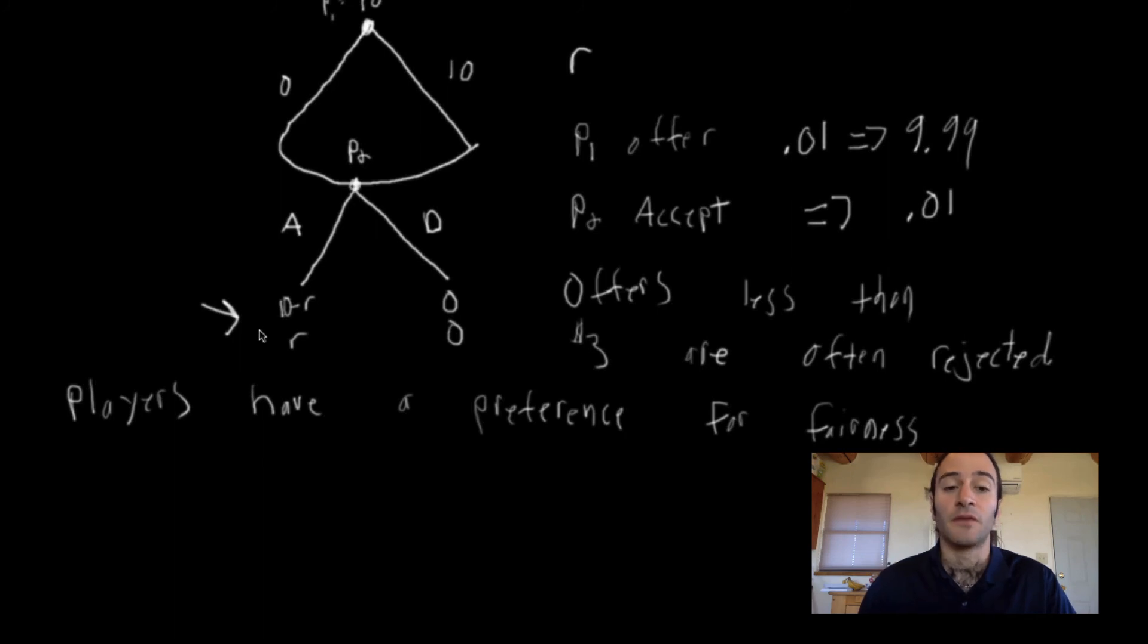So this is the nature of the ultimatum game, and it's just another example of when we put players, or put people in a laboratory, we see them not playing the Nash Equilibrium. In the next video, we're going to look at one more example of how players don't play the Nash Equilibrium in the laboratory.